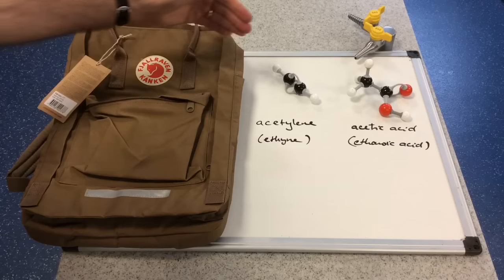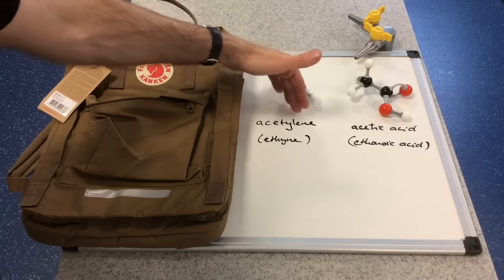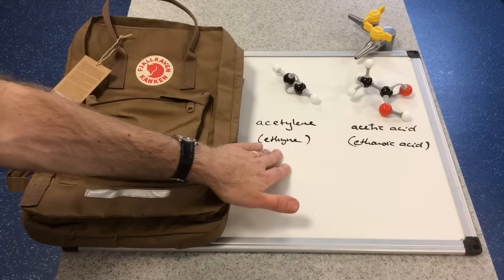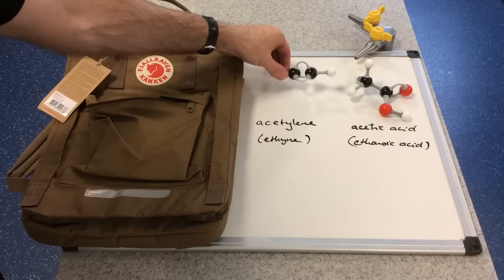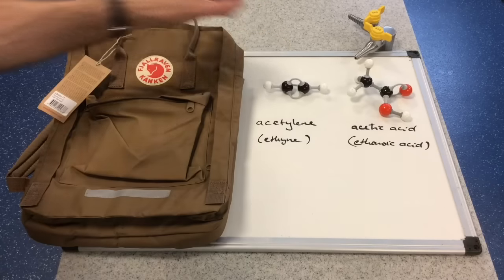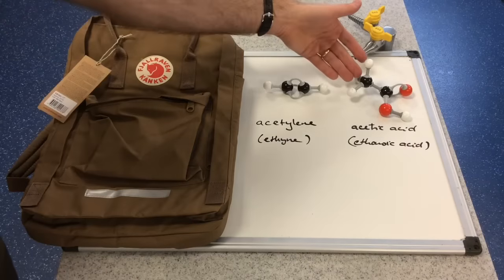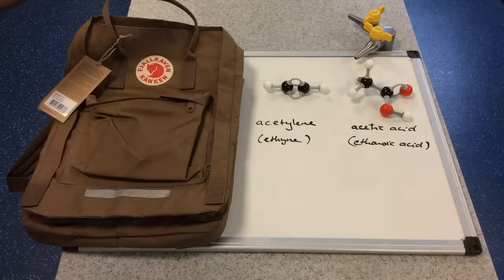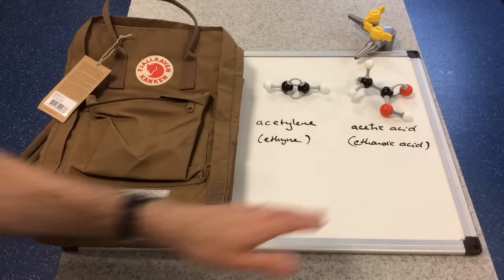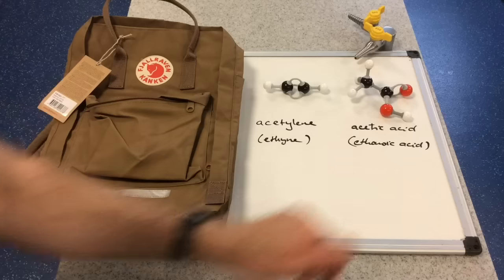So we've got two starting materials. We've got acetylene, which is the old name for ethyne. This is an alkyne with a triple bond between the two carbons. And we've got acetic acid. And again, that's an old name for something you're more familiar with, ethanoic acid.